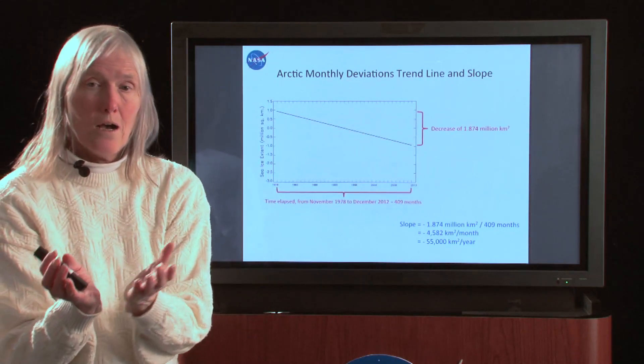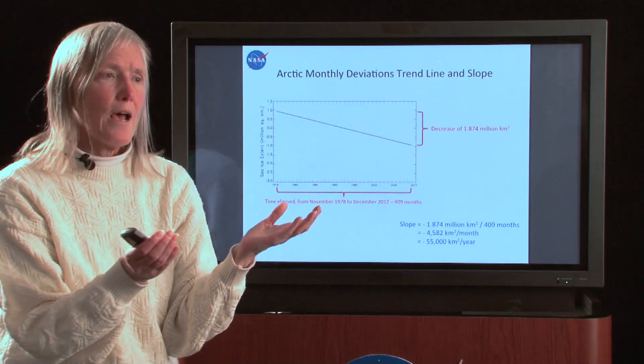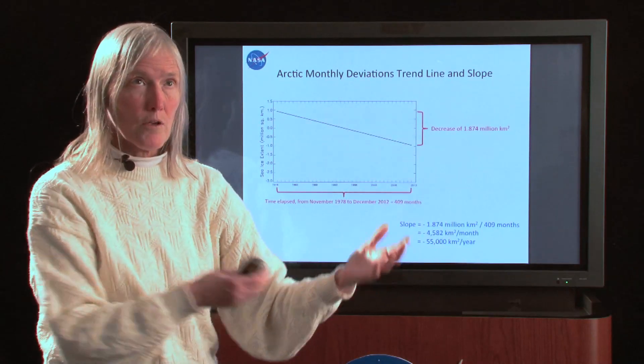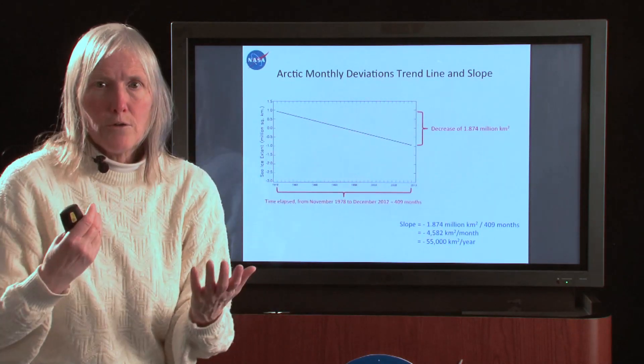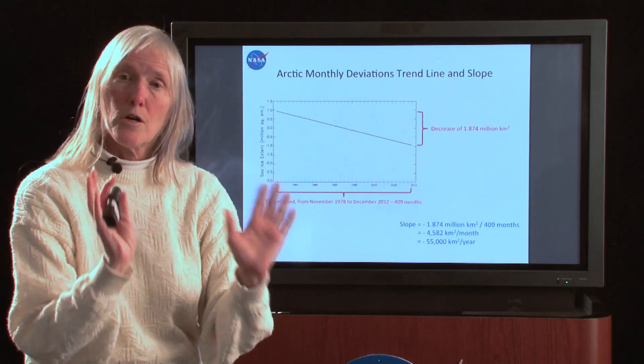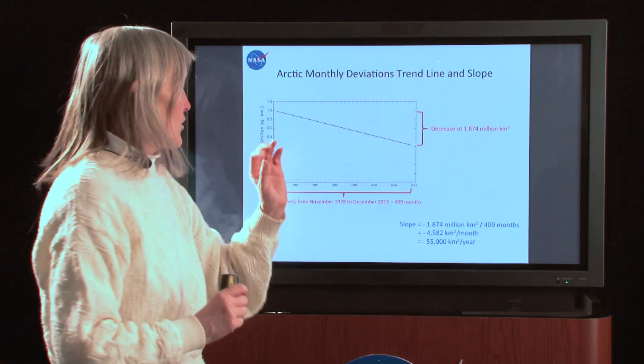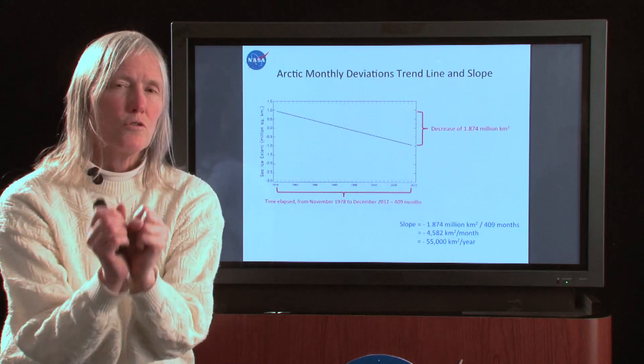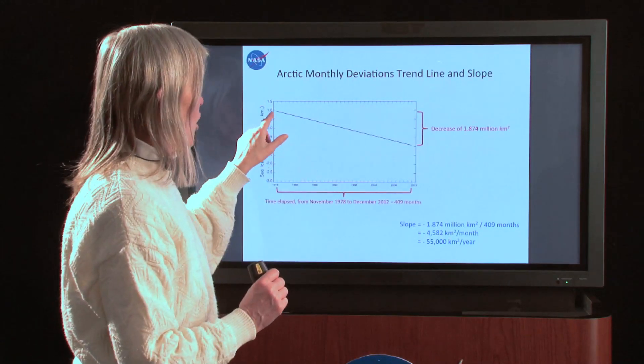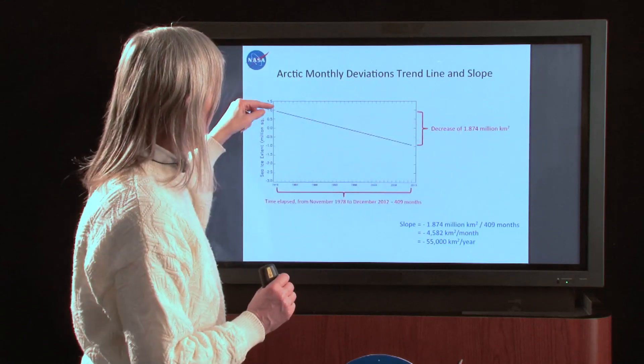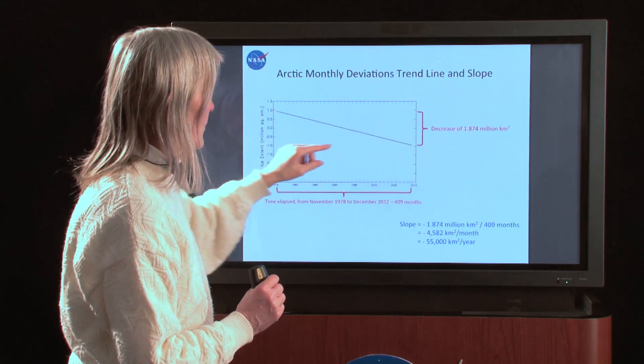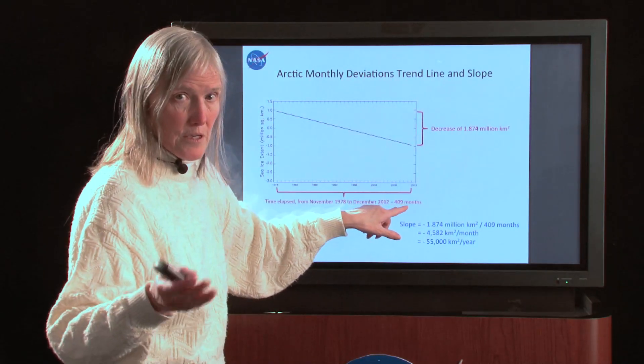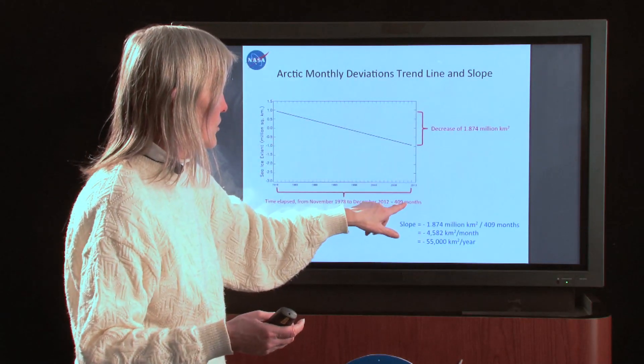And now we take that line and do the same thing we did before with a line. Once you've got a line, you calculate the slope the same way. It doesn't matter whether the line represents monthly deviations or whether it represents sea ice extents or whether it represents something about your health or temperatures in the atmosphere, whatever. Once you've got the line, you can calculate the slope. And that's part of what's so powerful about learning math. You can use it in so many different ways.